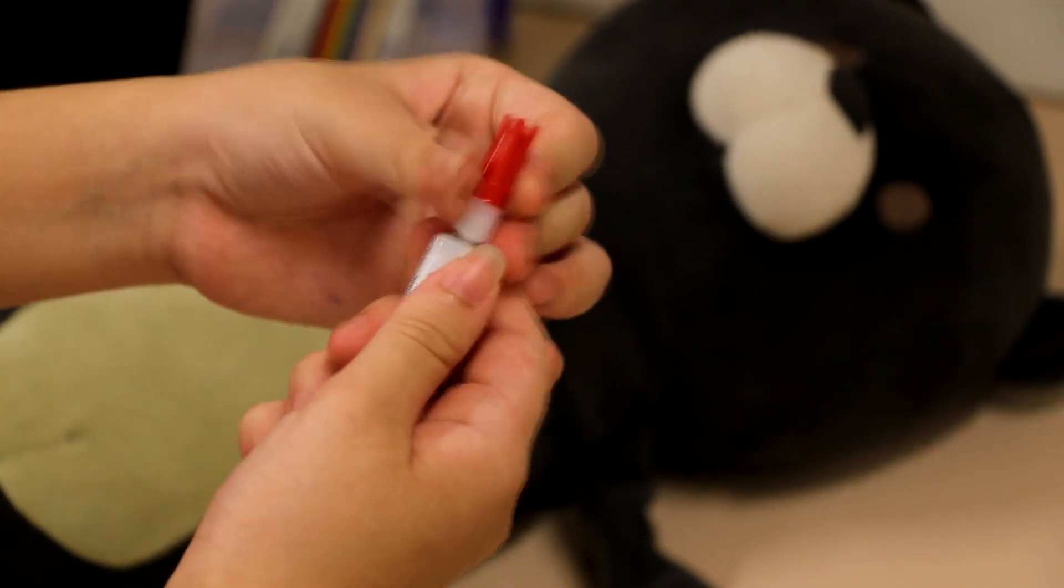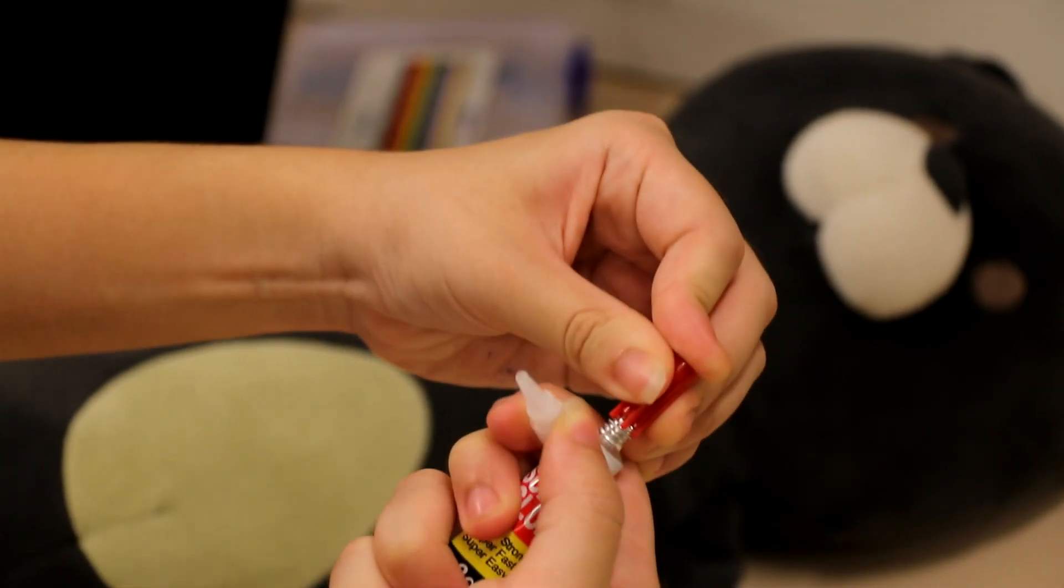Step 1. Open up the tube of superglue. You can use the cap to poke through the seal.